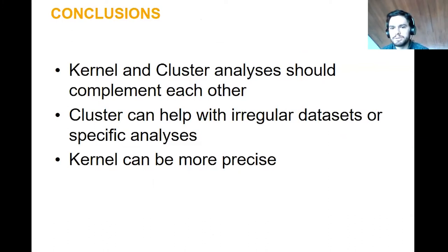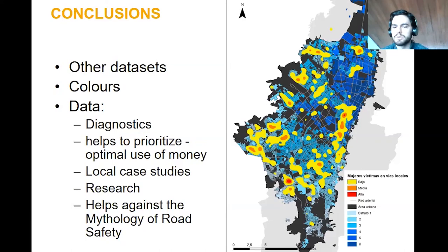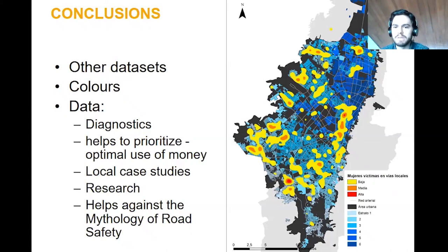Other datasets can be used alongside these datasets. For example, combining women victims in local roads with income data, you can see that most hotspots are located in low-income areas, which could help inform the decision on where to start. The code of colors is very important — we're communicating data. Maps should not have too much information and should be as easy to present as possible, because it's important that the message arrives to anyone, even if they don't have a data background.